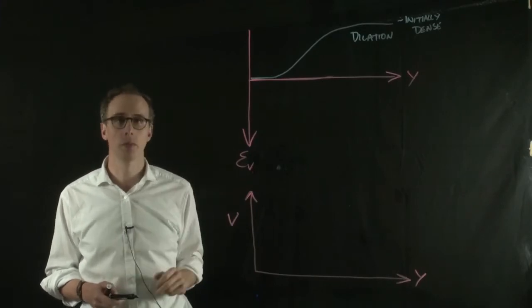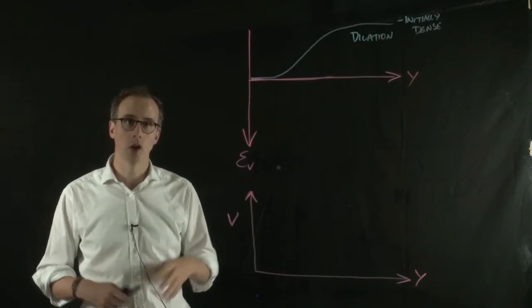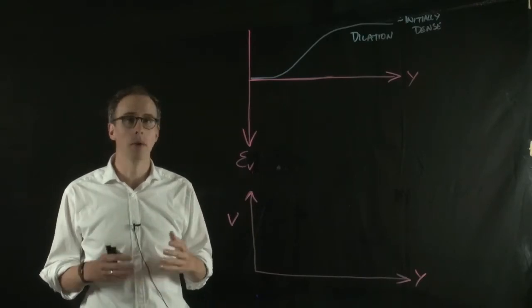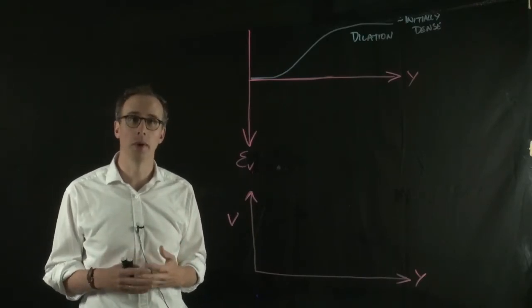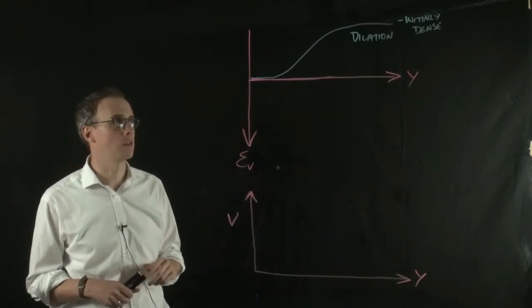we also take compressive strains also to be positive. So a material that might be compacting is taken as a positive volumetric strain. So it's a little bit counterintuitive, but it's not too difficult to figure out.